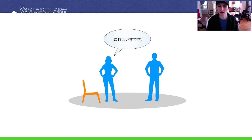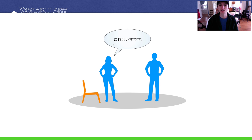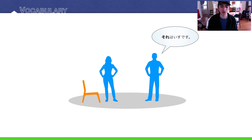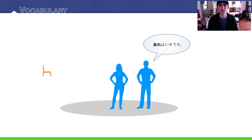Let's look at situations for when to use これ, それ, and あれ. Here we have a chair close to a woman in blue. She can say これはいすです — 'This is a chair' — because it's close to her. The guy farther from the chair would say それはいすです — 'That is a chair.' If the object is considerably farther away, usually from both speakers, they use あれ: あれはいすです.